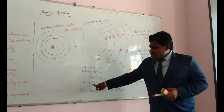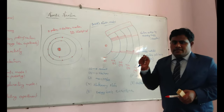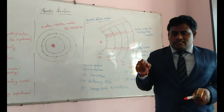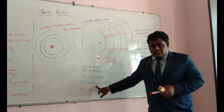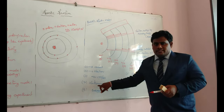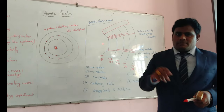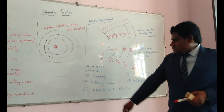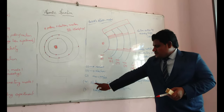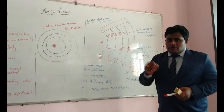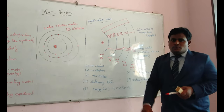The fourth point is: when electrons remain in those orbits, they are not able to radiate energy — meaning their energy remains constant in those orbits. Those orbits are known as stationary orbits. Stationary orbits means the energy of the electron remains constant while it remains in that orbit. These are known as stationary or ground state orbits, because here the potential energy of the electron is minimum, so the stability of the electron inside the stationary orbit is more.